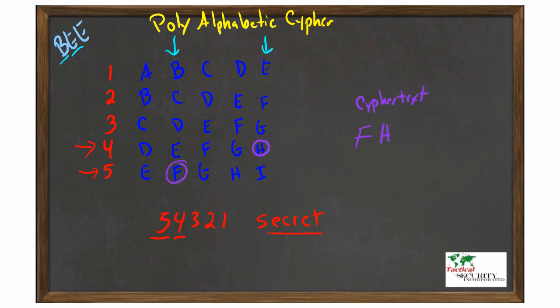So our ciphertext will be an H for the second character, and the last character in our very simple input is also an E. But in this case, we're going to cross-reference that with the 3 alphabet, and we'll come up with a G.